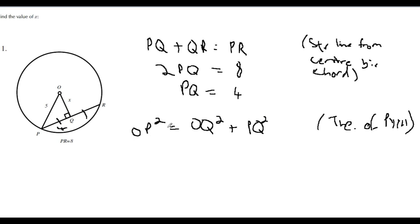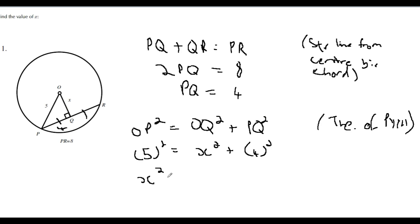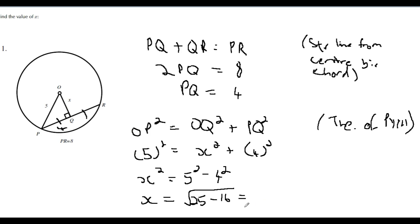Now to determine x using Pythagoras: OP squared equals OQ squared plus PQ squared. Substituting: 5 squared equals x squared plus 4 squared. So x squared equals 25 minus 16 equals 9, and therefore x equals 3.